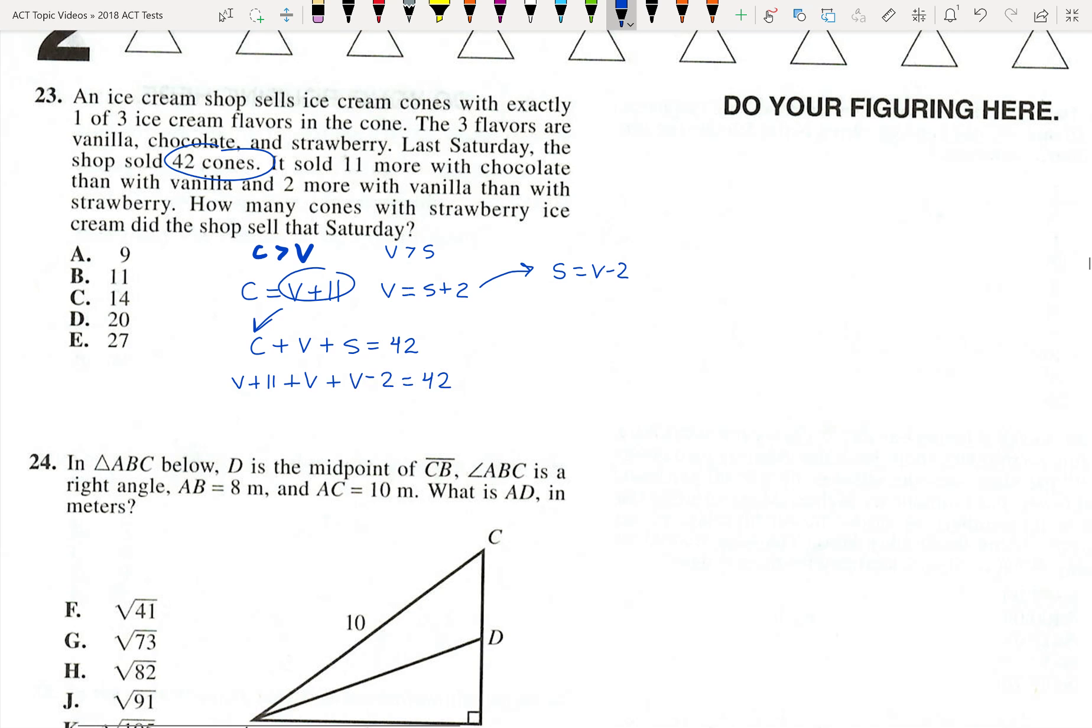And then it's simply kind of combining like terms from there. And it's not too difficult. 3V plus 9 equals 42. 3V is going to be equal to 33.